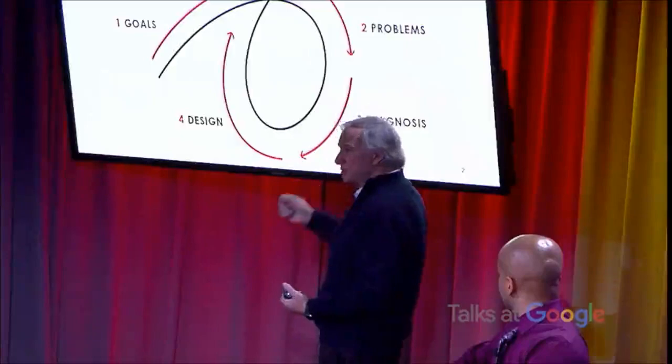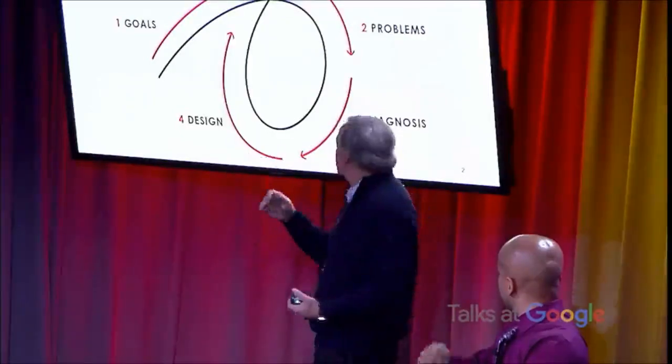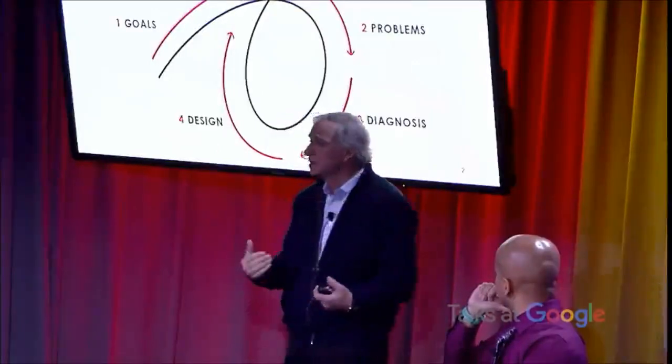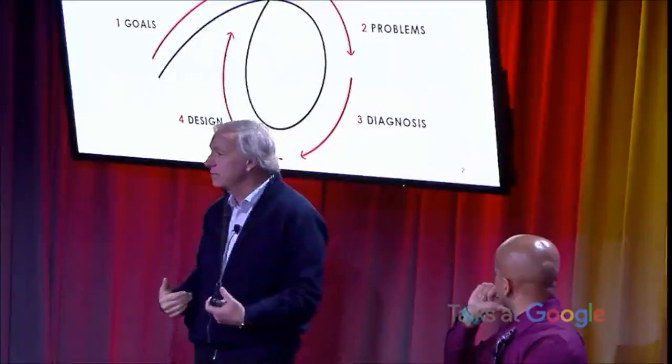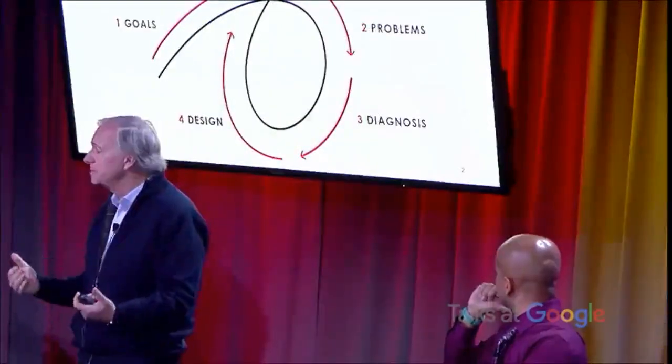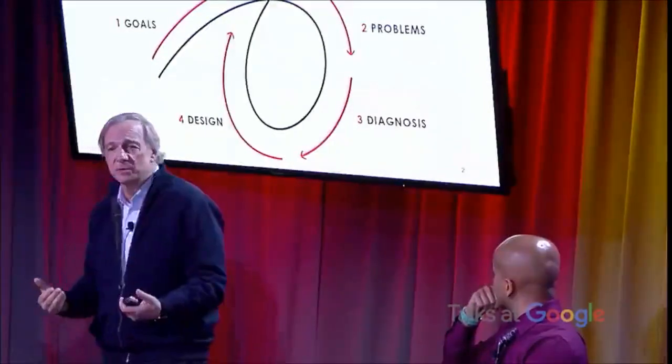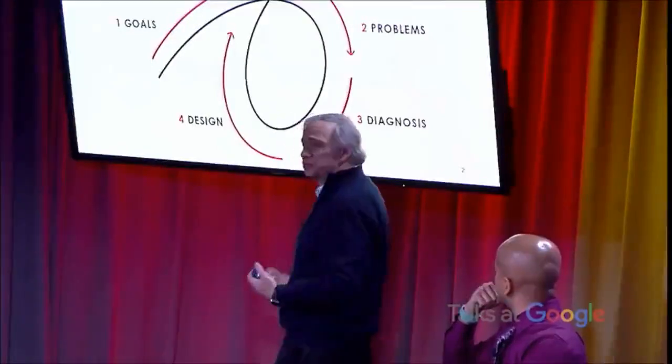And when you get at that root cause, only by knowing that root cause can you then design a way to get around that root cause. Like, if you're not good at something yourself, it's okay if you find somebody else who's good at the things that you're not good at. Because nobody can be good at everything.